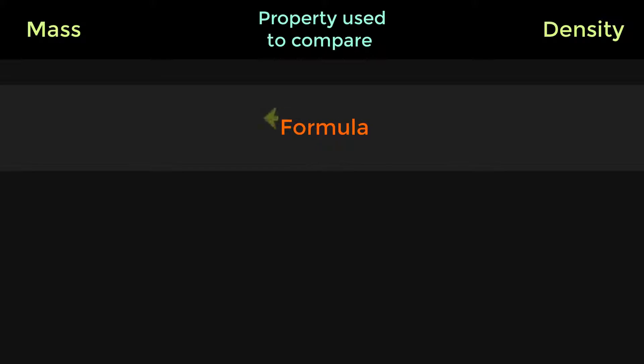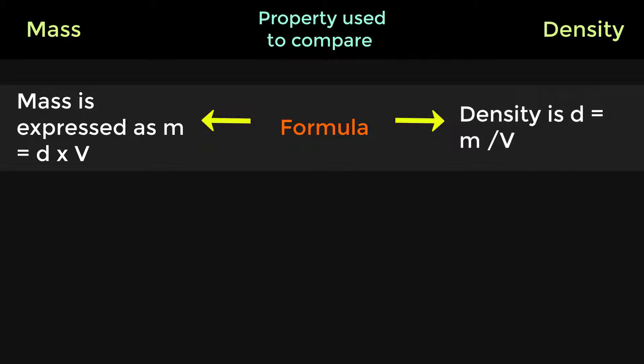Formula. Mass is expressed as M = D × V. Density is expressed as D = M / V.